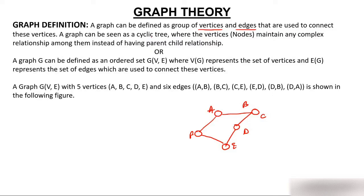A graph can also be seen as a cyclic tree. In a normal tree, if there is a cycle, it is no longer a tree — it becomes a graph. In a graph, vertices maintain complex relationships among themselves, rather than a simple parent-child relationship as in a tree.